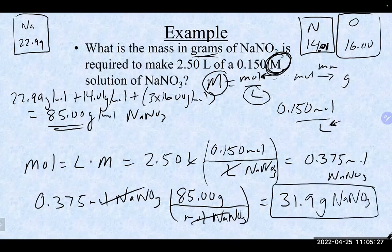So if you were to make the solution, you would scoop out 31.9 grams of sodium nitrate, add deionized water to get a total volume of 2.5 liters, mix it well, and you should have a 0.15 molar solution.